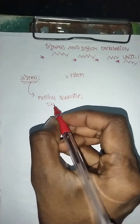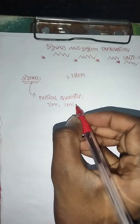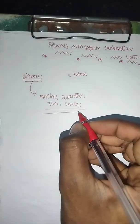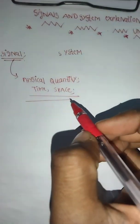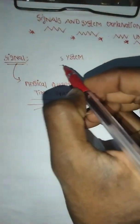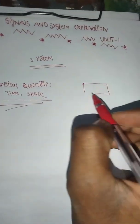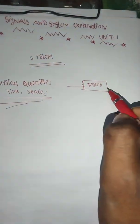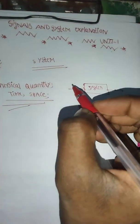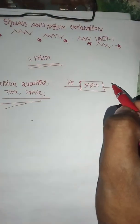A physical quantity is one which depends on time, space, and other independent variables. Now, one example of the system is the response — the output of the system.